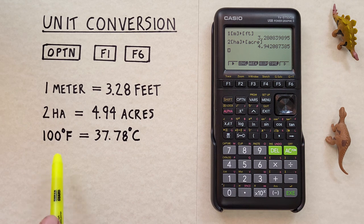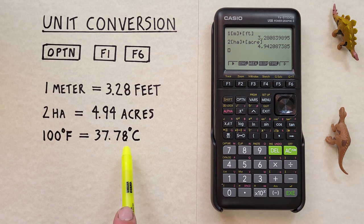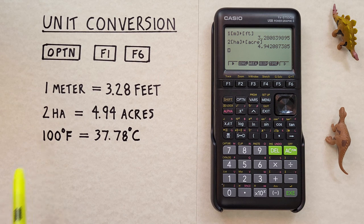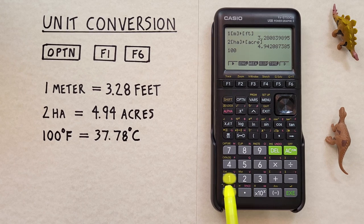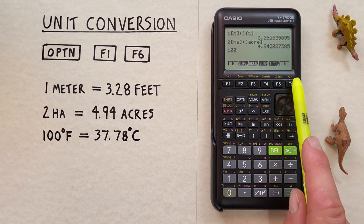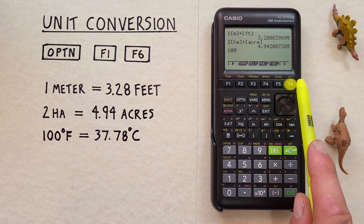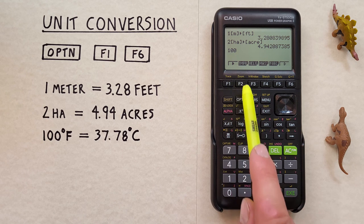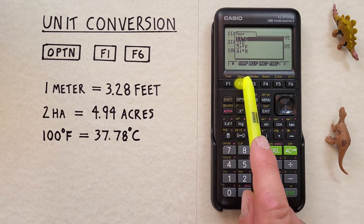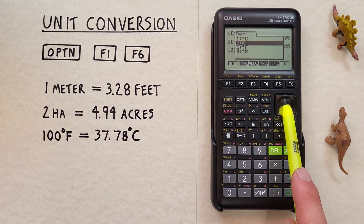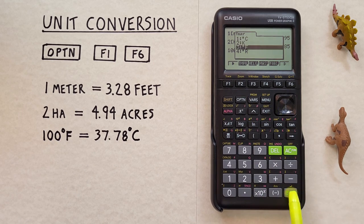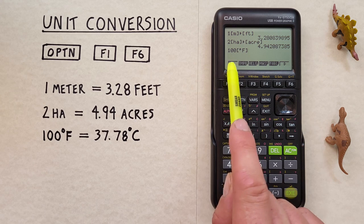Another example, let's go from Fahrenheit to Celsius. What if we had 100 degrees Fahrenheit and wanted to convert that to Celsius? Well first we'll enter our 100 and then scroll across until we see temperature. Select that and we're using Fahrenheit so we scroll down, select that, and hit EXE. We have 100 degrees Fahrenheit.